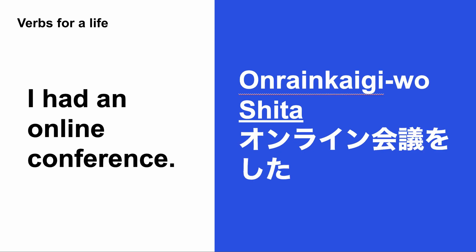オンライン会議をした — I had an online conference. More companies started adopting an online conference system. Even though Japan still has a very heavy face-to-face culture, people working at start-ups quite often use online conferences. オンライン会議をする → した is past tense. オンライン会議をした / オンライン会議をしました.